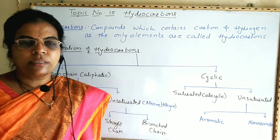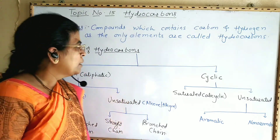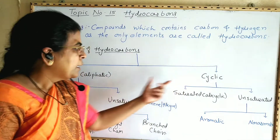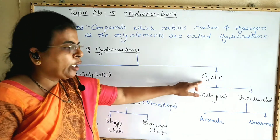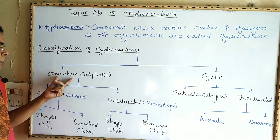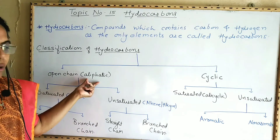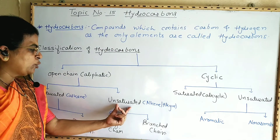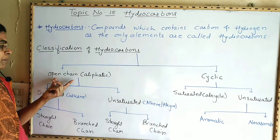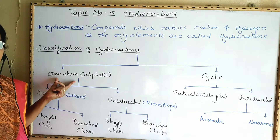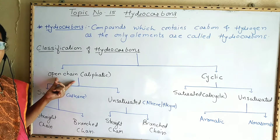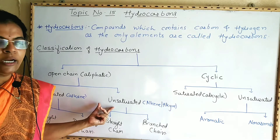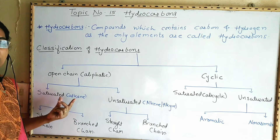Next we are going to see the classification of hydrocarbons. Hydrocarbons are classified into two main types: open chain hydrocarbons and closed chain or cyclic hydrocarbons. Open chain hydrocarbons are also called aliphatic hydrocarbons, and these aliphatic hydrocarbons are of two types: saturated hydrocarbons and unsaturated hydrocarbons. The hydrocarbons which possess an open chain of carbon atoms are called open chain hydrocarbons.